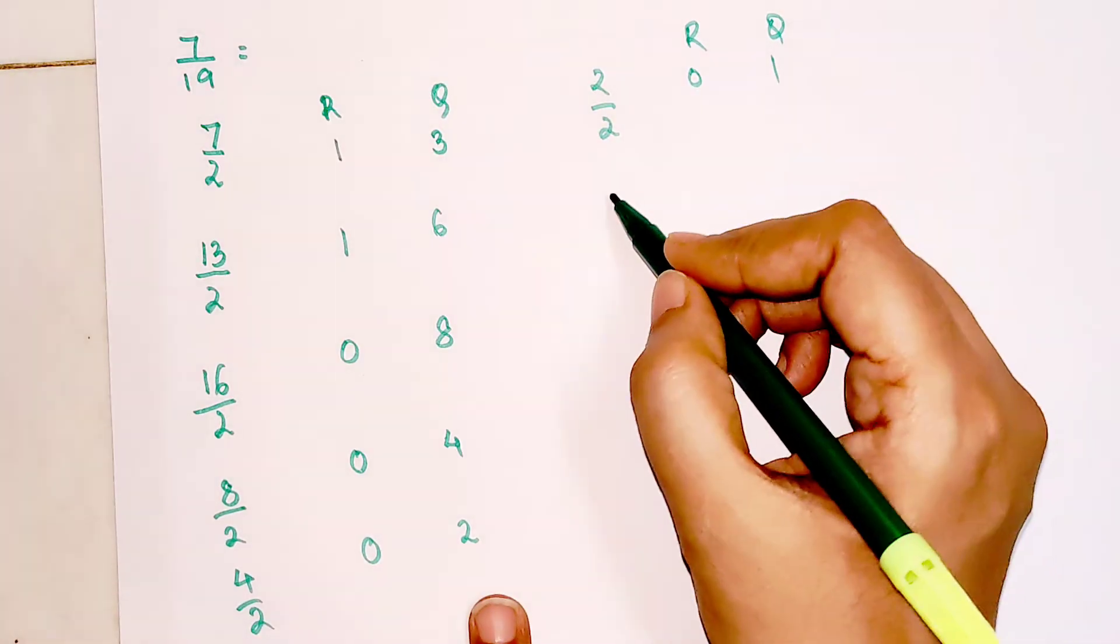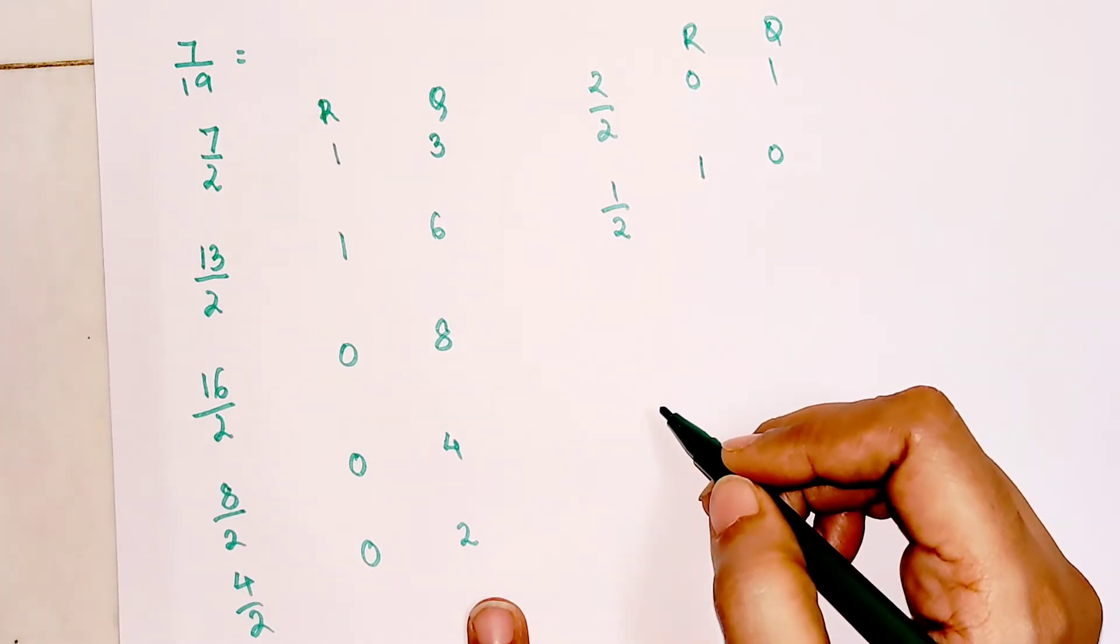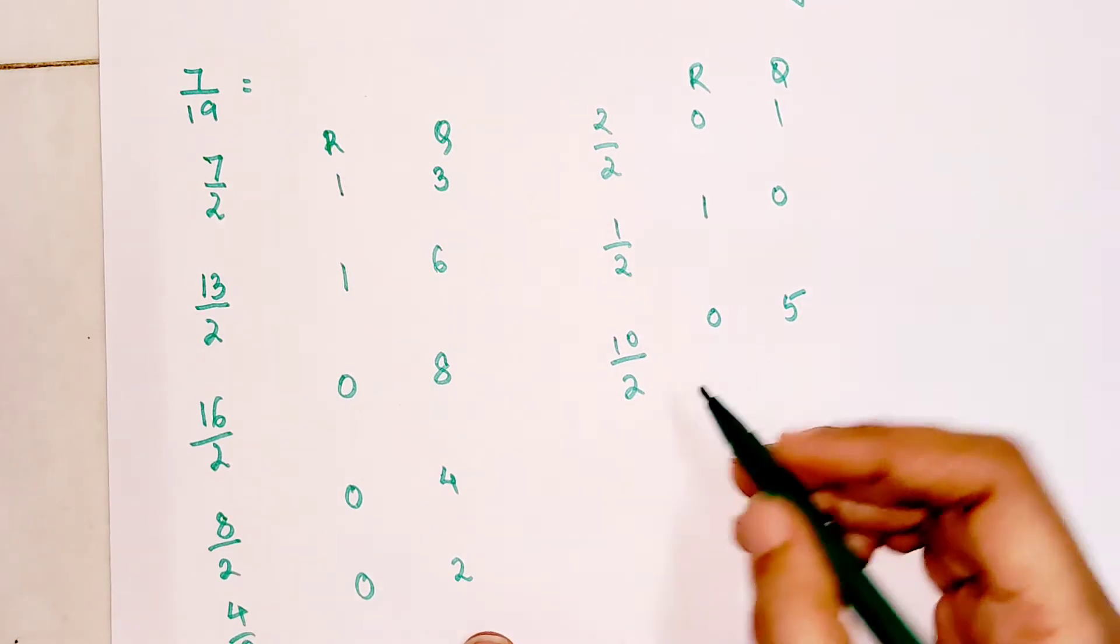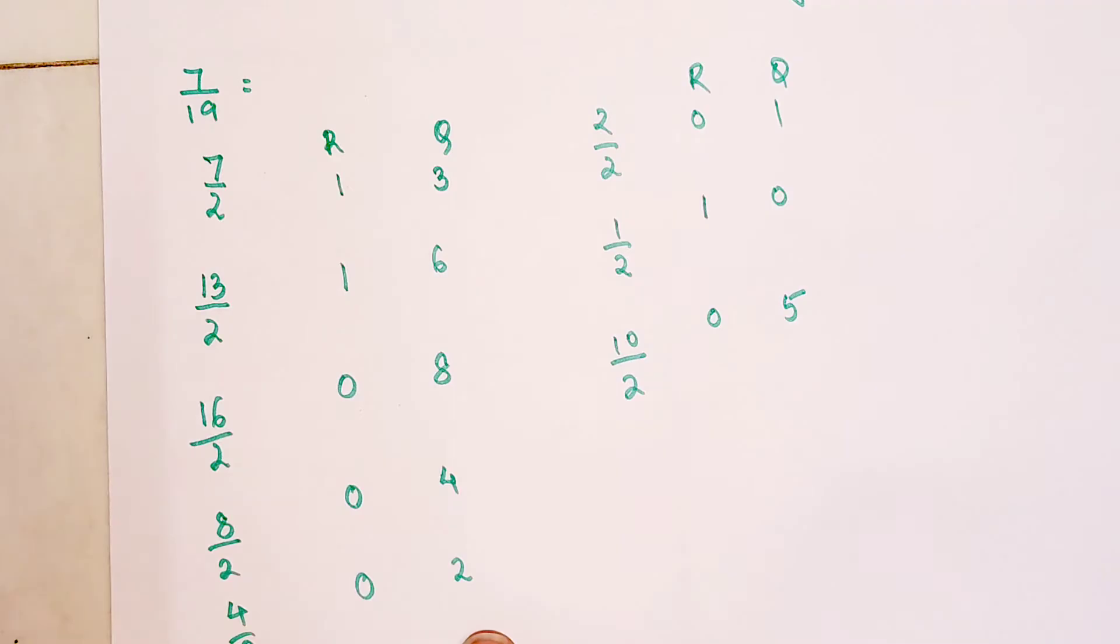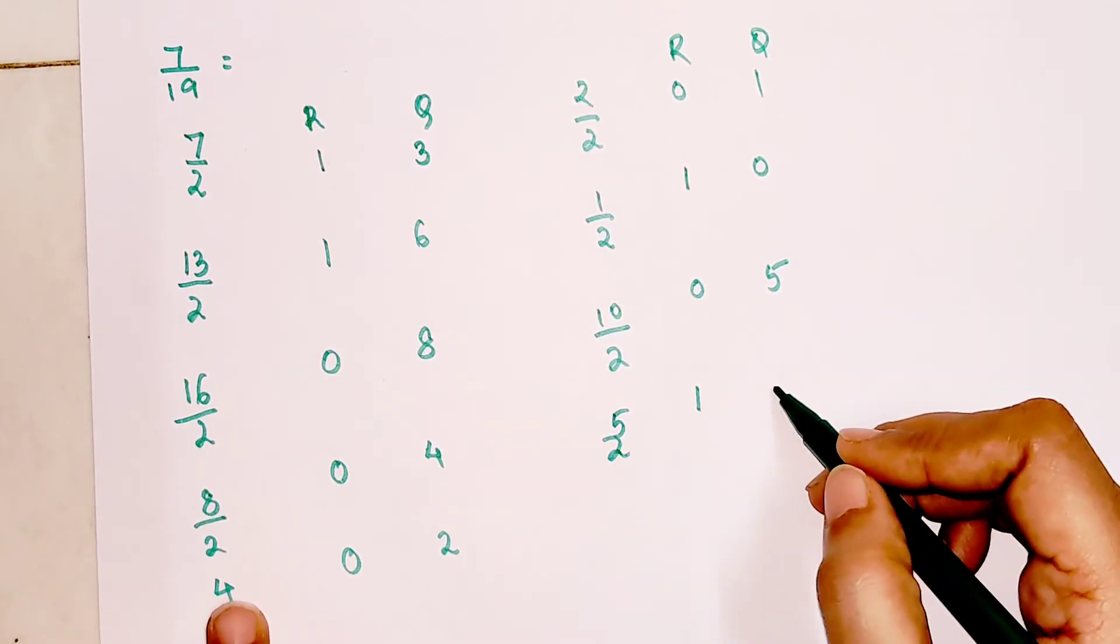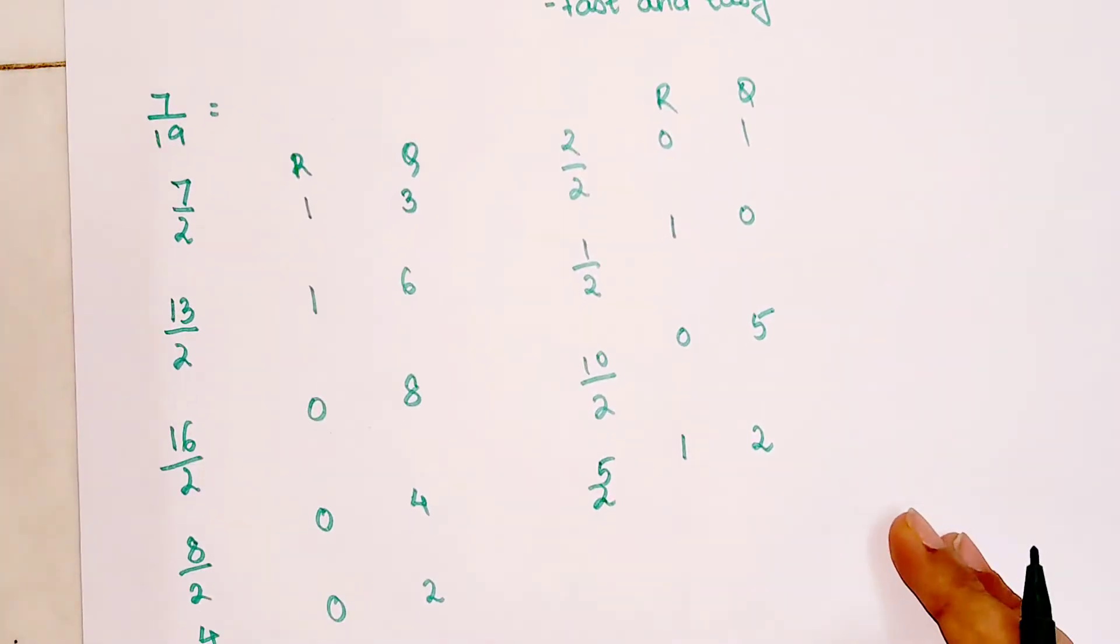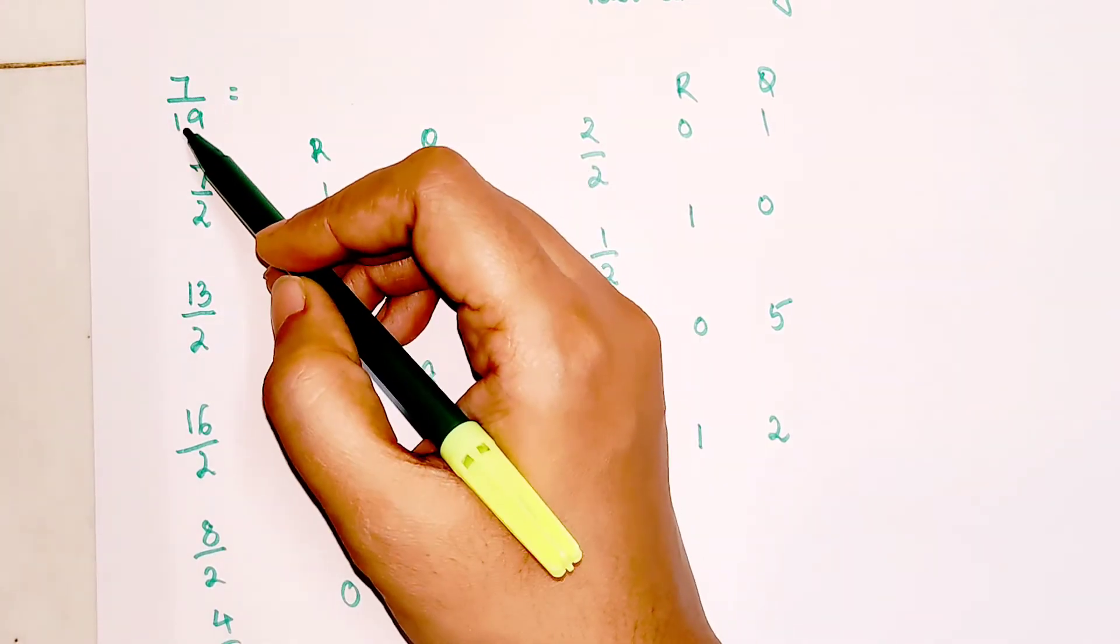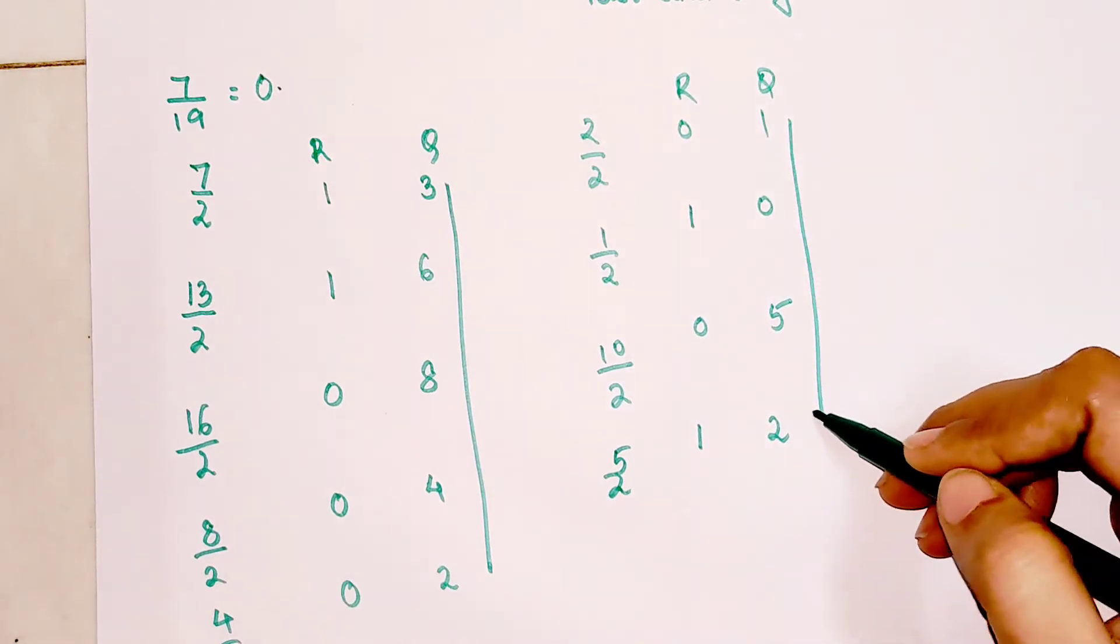Then 1 divided by 2 gets you remainder 1 and quotient 0. Then 10 divided by 2 gets you 0 and 5. Then 5 divided by 2, we get remainder 1 and quotient 2, and so on. Now, you might be wondering what is the actual answer.